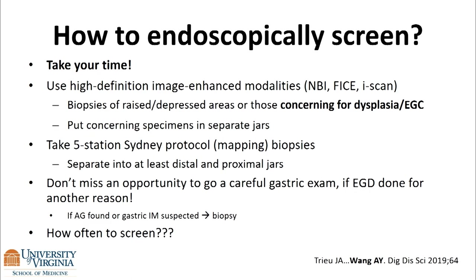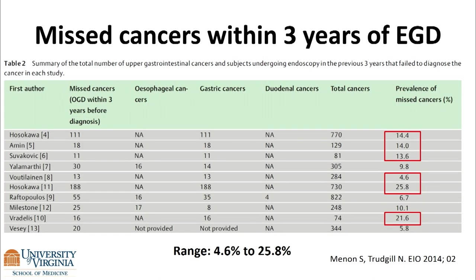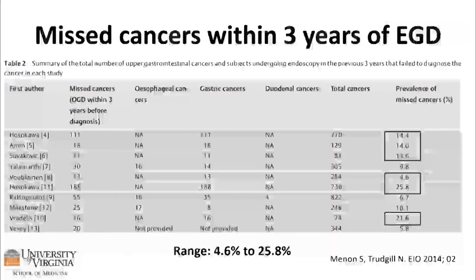How do we endoscopically screen? Take your time. Use high-definition, image-enhanced modalities. Biopsy areas that are raised or depressed and concerning for dysplasia or early gastric cancer. Put concerning specimens in separate jars so you can come back if it's resectable. Use the five-station Sydney protocol. Don't miss an opportunity to do a careful gastric exam if EGD is done for another reason. Even in the hands of experts, missed upper GI cancers within three years of EGD range between 5 and 26% — so there is real room for improvement.